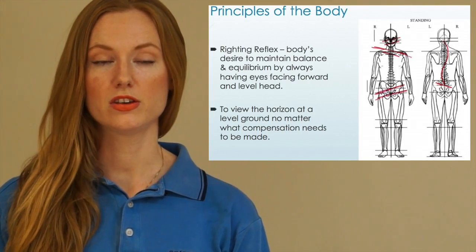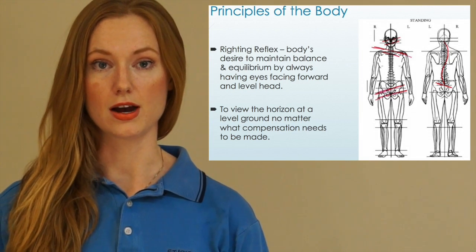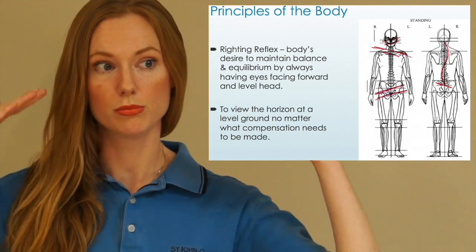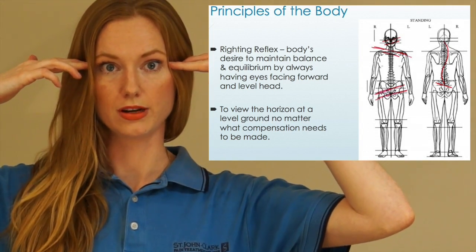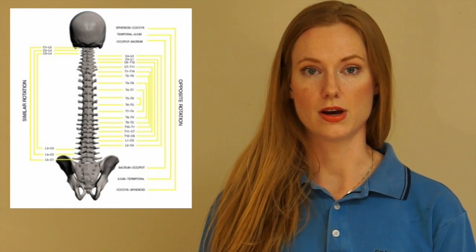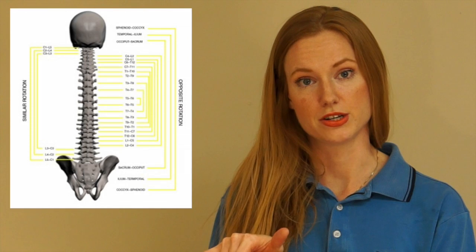The first one is the righting reflex. It is the body's desire to maintain equilibrium by always having the eyes meeting the horizon at level. That means you can compensate anywhere below the eyes, but your eyes will always be straight. The next concept is called the Lovett Reactor, which states that certain vertebrae in the body move in similar rotation with each other, while others move in opposition.